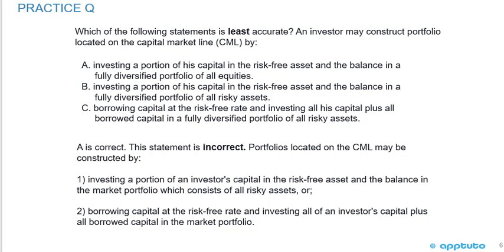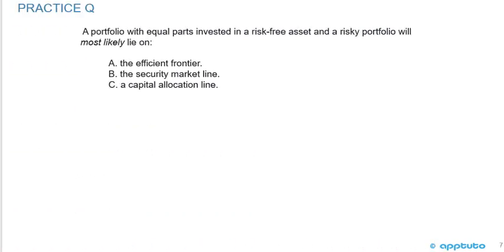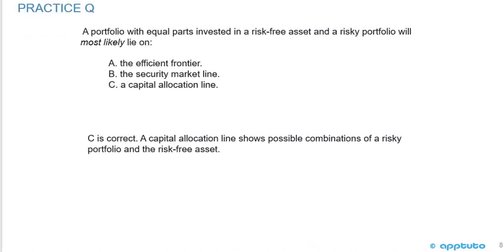One last quick practice question: a portfolio with equal parts invested in a risk-free asset and a risky portfolio will most likely lie on: A) the efficient frontier, B) the security market line, or C) a capital allocation line. The correct answer is C. A capital allocation line shows possible combinations of a risky portfolio and the risk-free asset. That's the last slide for this LOS — thank you.